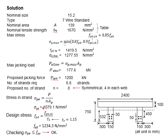The fp0.1k is obtained here. Then, the design stress in the tendon is 1234.3 N/mm². The stress in the tendon is less than the design stress, so the tendon is acceptable.